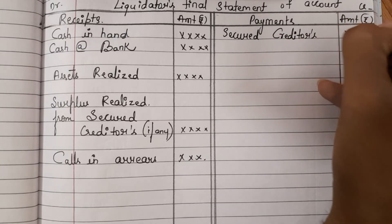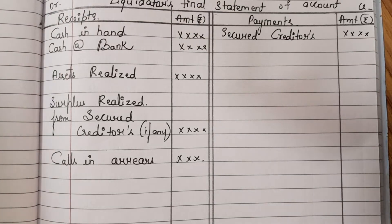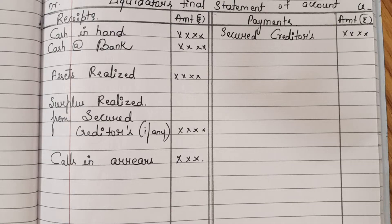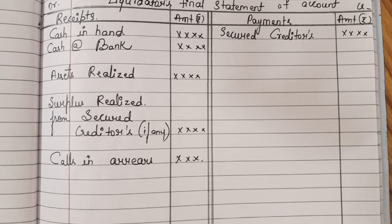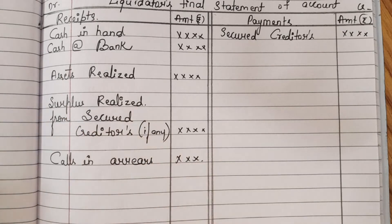Who are secured creditors? We would have taken some loan from creditors, and for that we would have pledged something — the house, some property, or some machinery. Based on that pledge, we obtained the loan. So it is our first priority to clear off the secured creditors so that our assets will be released.